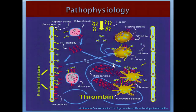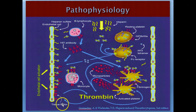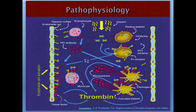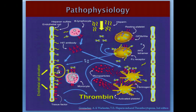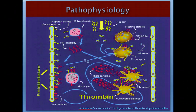In HIT, the PF4-heparin complex also attaches to the surface of monocytes, and when attacked by antibodies, they cause the monocyte to secrete tissue factor, which induces the coagulation cascade. The endothelium has heparin sulfate attached to it — a glycosaminoglycan with minimal anticoagulant activity. PF4 mistakenly attaches to this heparin sulfate and is also attacked by the antibody, causing immune injury to the wall, causing the endothelial cell to also secrete tissue factor. All three sources — endothelial wall, monocyte, and platelets — combined lead to marked thrombin formation, explaining why HIT is very hypercoagulable.